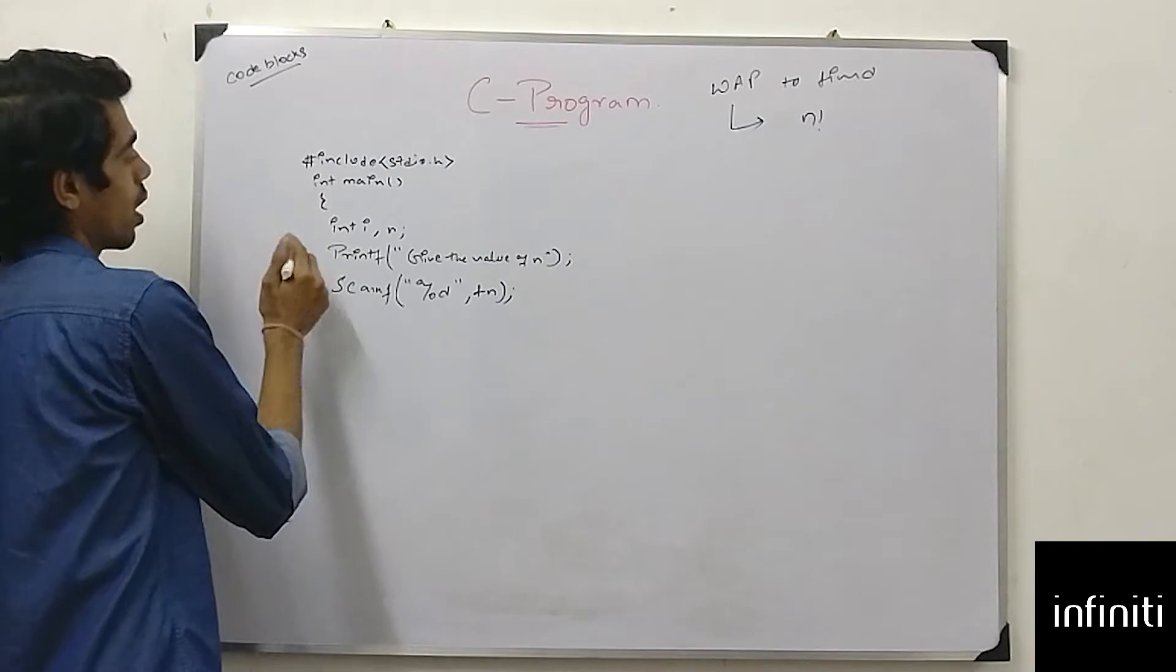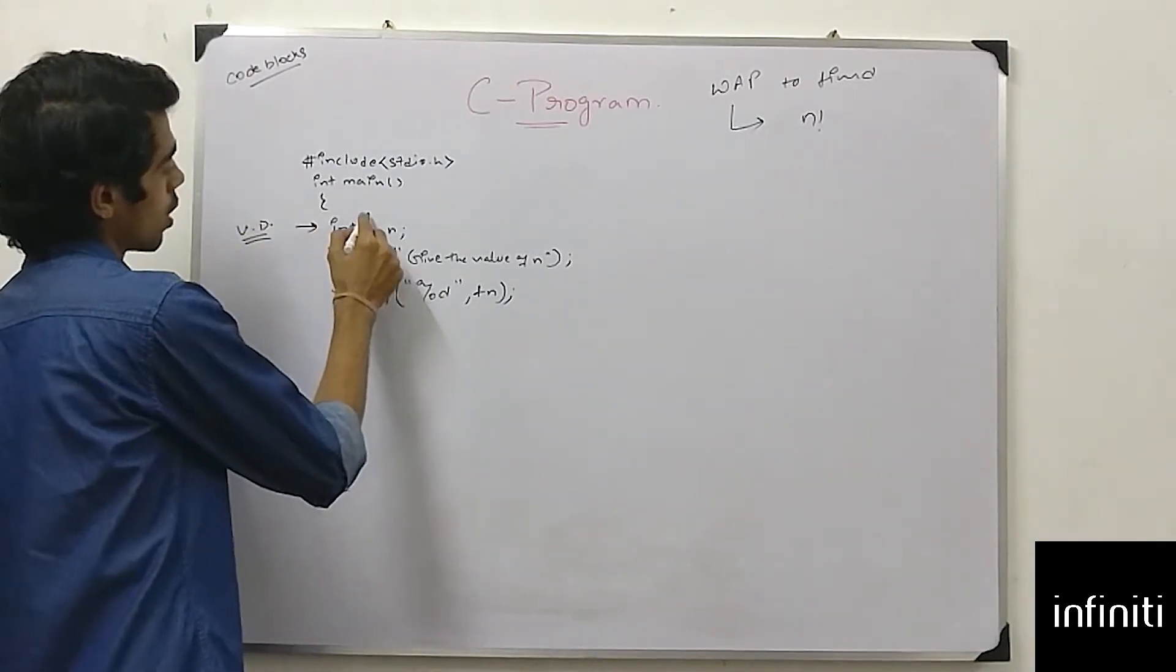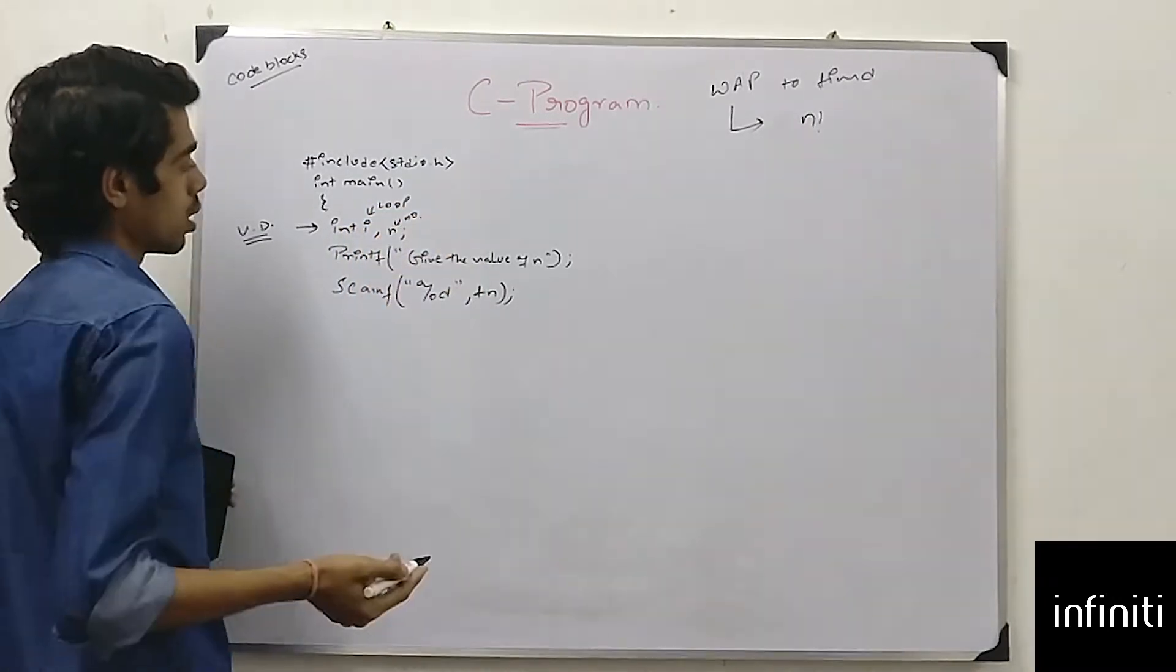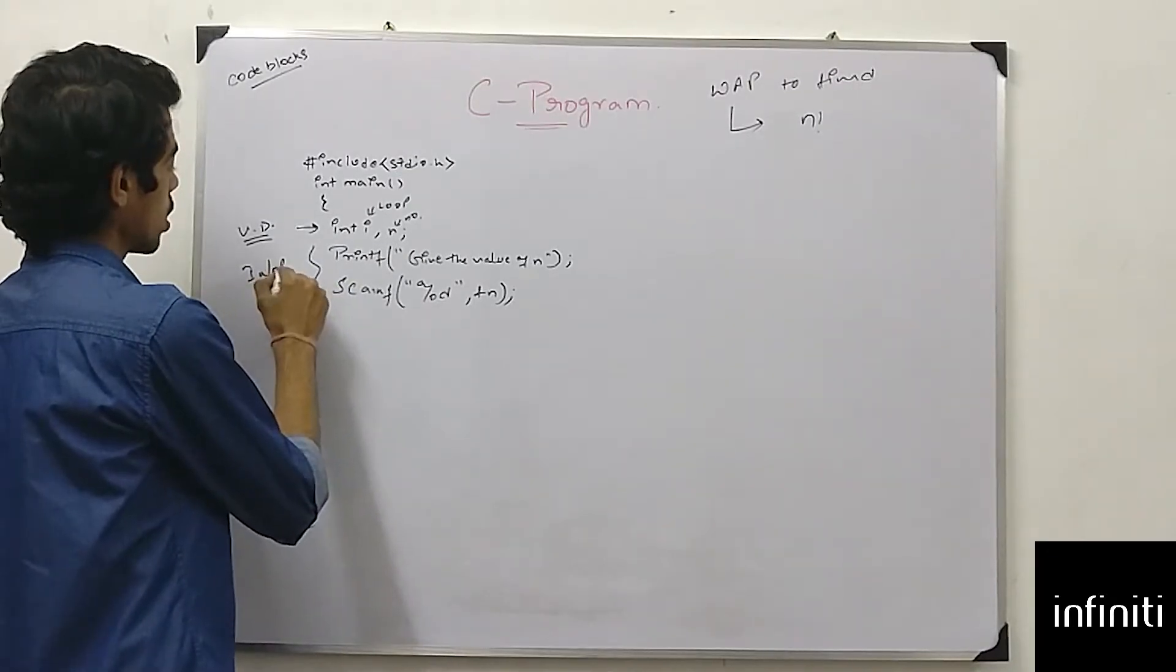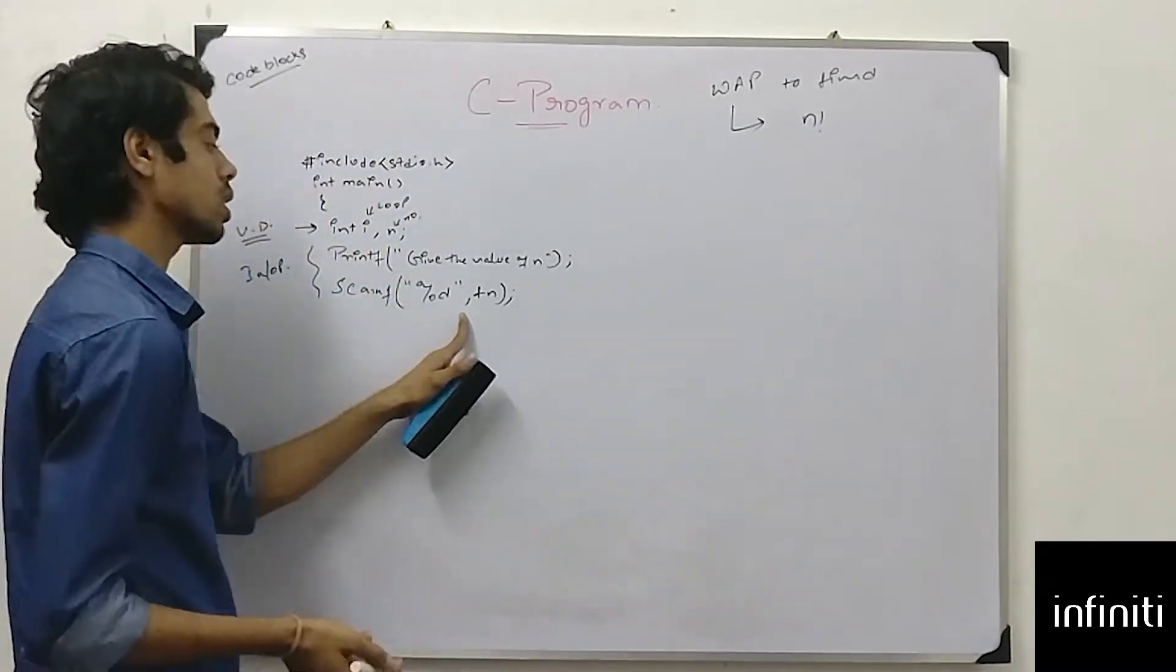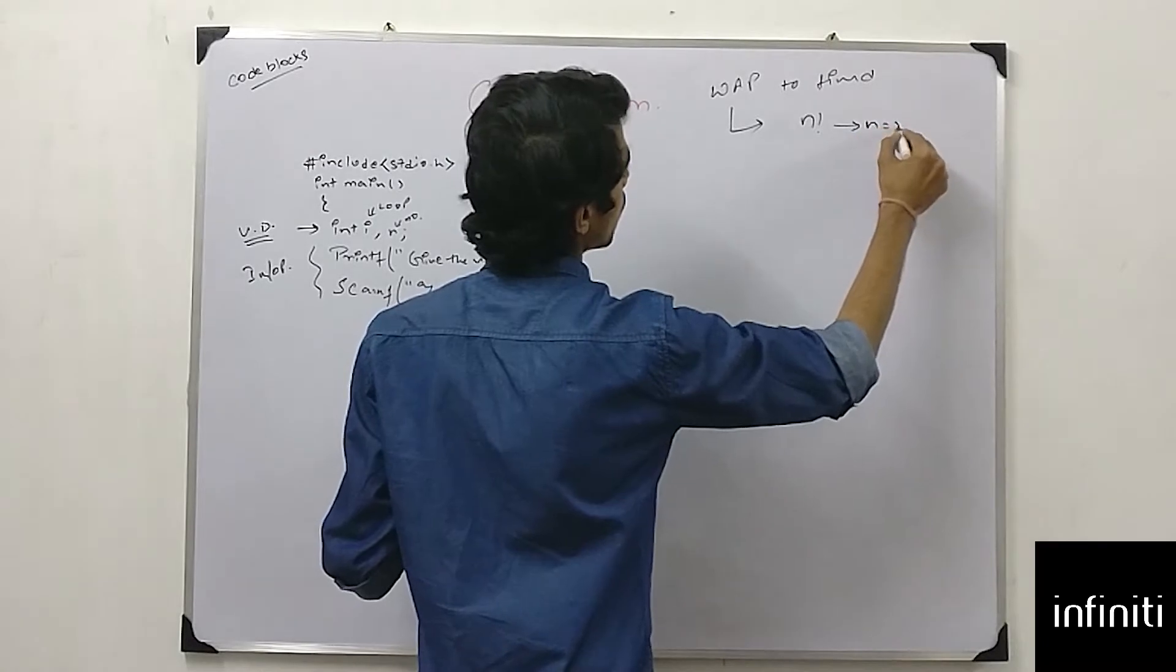What I have done, I have declared i for loop and n for the number. What I state there? Scanner input output which gives the value of n. If I ask for the value of n, the scanf is ampersand n and I have to write n. Let us say n is equal to 5.